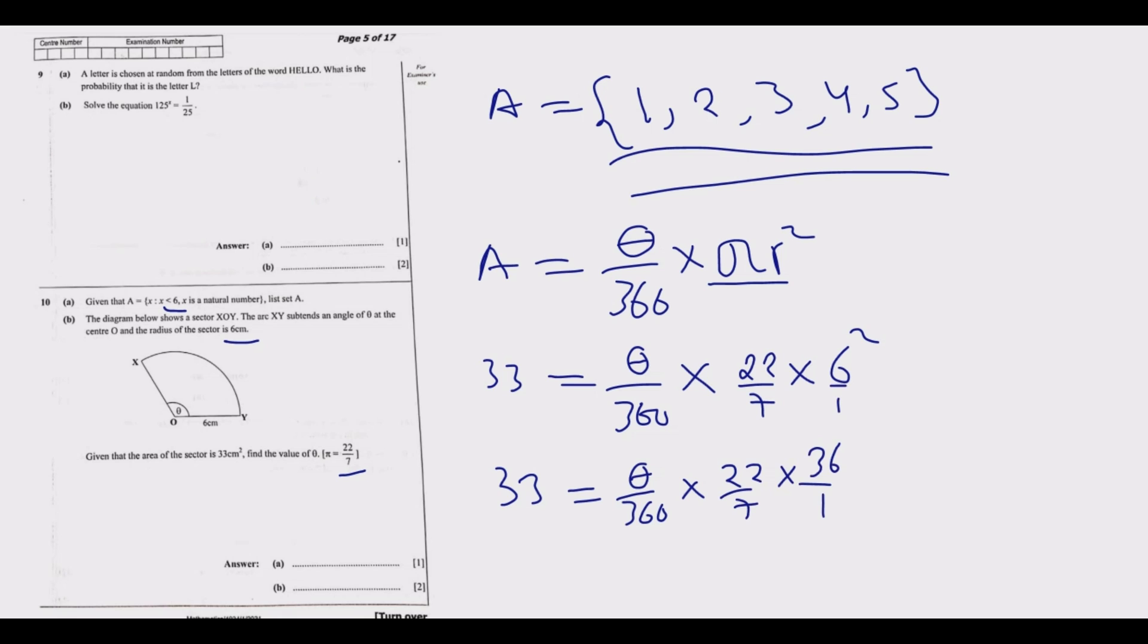Before you start doing anything, remember in paper 1 calculators are not allowed, so you need to see what you can cancel before you start multiplying. This one and this one - 7 into 36 is 7 into 35. 7 into 7 is 1, 7 into 22 is... let me think. 18 can go into 36 is 2, 18 into 22 leaves 11. Then at least it's much more easier.